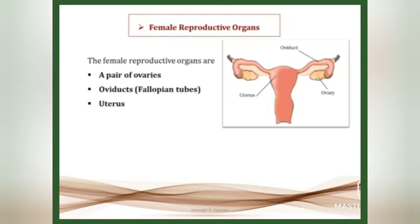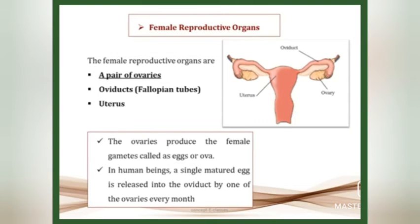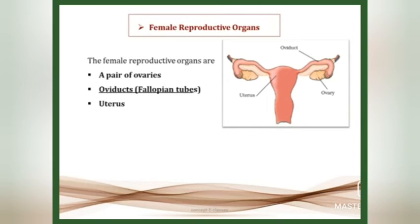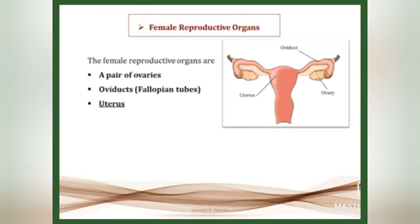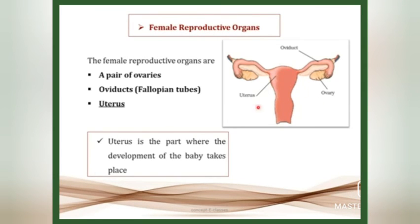The female reproductive organs are a pair of ovaries, oviducts — also called fallopian tubes — and the uterus. The pair of ovaries produce female gametes called eggs or ova. In human beings, a single matured egg is released into the oviduct or fallopian tube by one of the ovaries every month. The fallopian tubes receive the matured egg from the ovary, and fertilization takes place inside the fallopian tube. The fallopian tube also helps the egg travel from the ovary to the uterus.